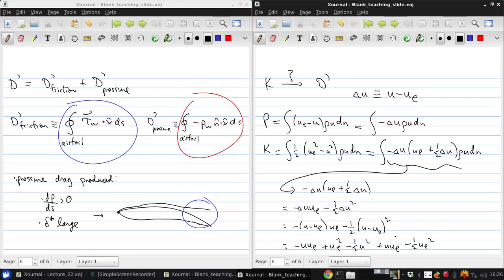These terms cancel. And this term partially cancels with this term. And we get back to one-half UE squared minus one-half U squared.